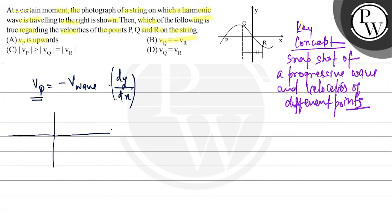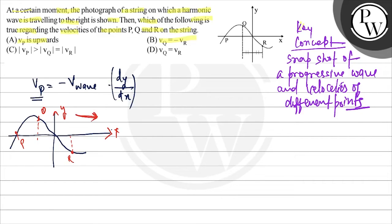In the snapshot, we have point P, point Q, and point R marked. We have a y-axis and an x-axis. The wave is traveling to the right. Looking at point P on the graph, the slope at P is positive.